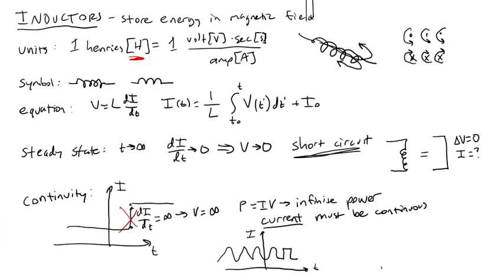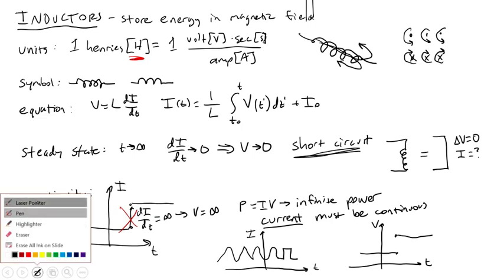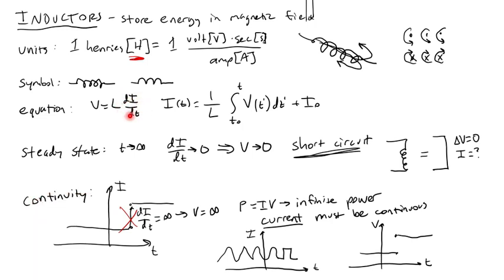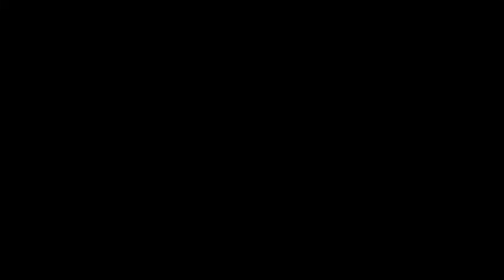And I can have jumps in voltage. So jumps in voltage are okay. I can have an instantaneous change in voltage over an inductor, but since the derivative in my equation is dI dT, that's the one where I can't have an instantaneous change or else I wind up with infinite voltage. Not the other way around. An instantaneous change in voltage does not give me an infinite current.